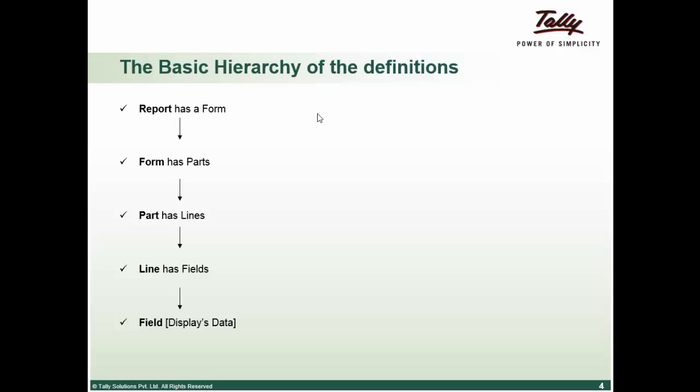Let me repeat once again. A report has a form in display mode and can have multiple forms in print and export mode. Form further contains vertical parts. Part can further contain parts or lines. Lines are always vertical. If a part contains parts, however, at the end the last part in the hierarchy should contain a line. Line can further contain lines.